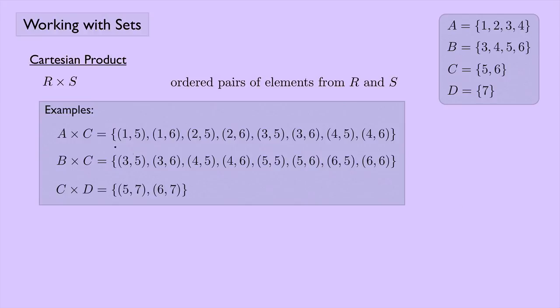If we look at the Cartesian product of A and C, then we would take as the ordered pairs here the first element of each ordered pair: the one, the one, the two, the two, the two, the three, the three, the four, and the four, those are all from the set A. And then if we look at the second one, the five and the six, the five and the six, the five, the six, the five, the six, the five, and the six, those are all from set C.